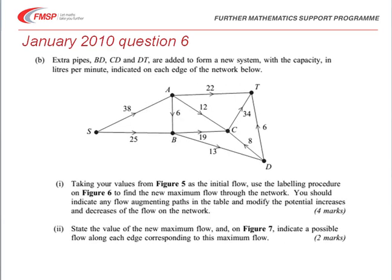The question goes on to add extra pipes to another point D. Taking what we've done already as an initial flow, we're to use the labelling procedure to find a new maximal flow through this new network. We should write down the flow augmenting paths and look at the way that changes the flow in the network. Finally, we've got to state the value of the new maximum flow and indicate a possible flow along each arc corresponding to this.